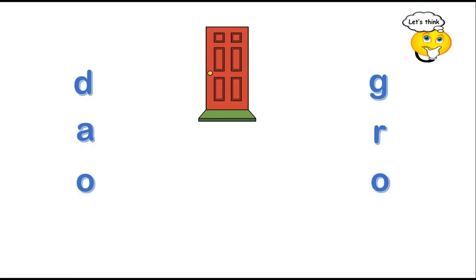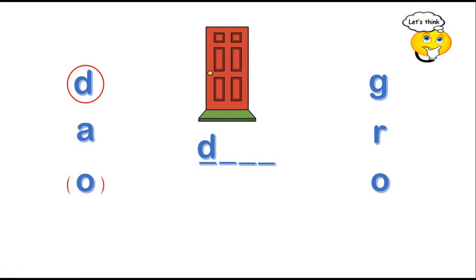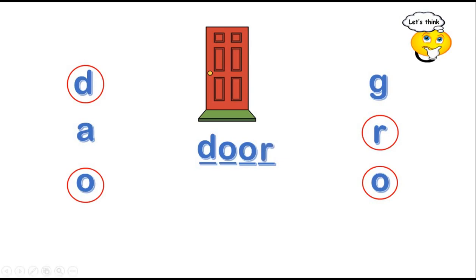Okay, look at the picture. What's this? The first letter is missing, the second letter is missing, and the third letter is missing, and the last one is missing. Okay, what's the word? What's this? Let's think. What is the first letter? D. The second one is O. Door. Read the word. Door. Thanks for watching. Goodbye.